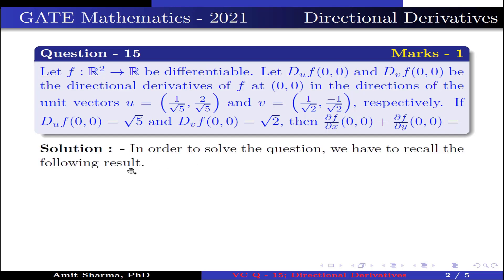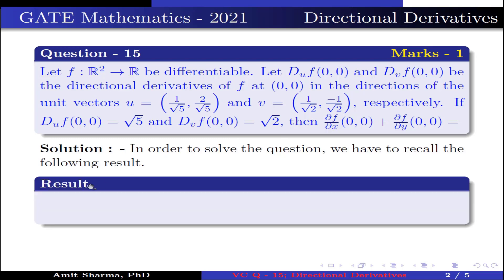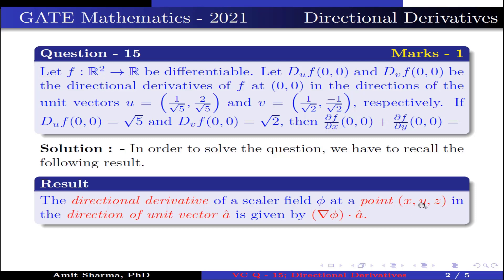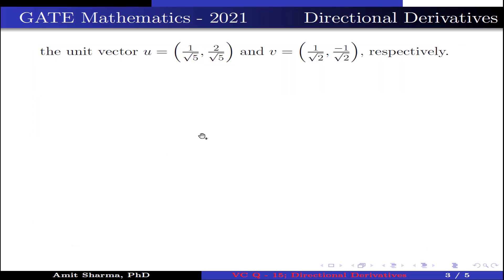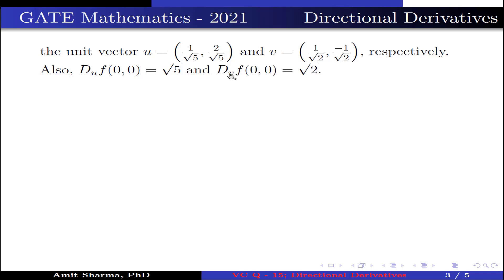To solve the question, we recall the following result: the directional derivative of a scalar field φ at a point (x, y, z) in the direction of unit vector a is given by ∇φ · a. Given f from ℝ² to ℝ is differentiable, with D_u f(0,0) = √5 and D_v f(0,0) = √2.